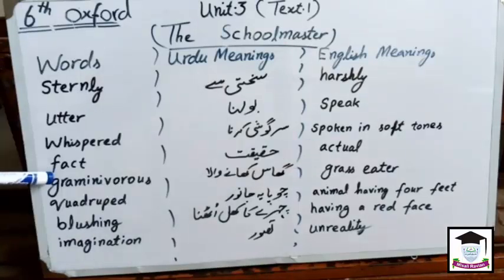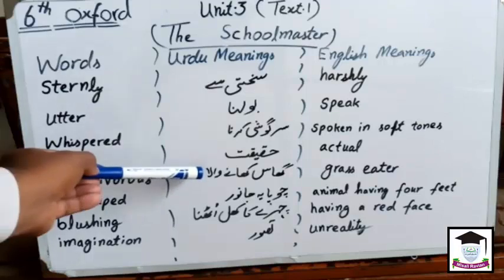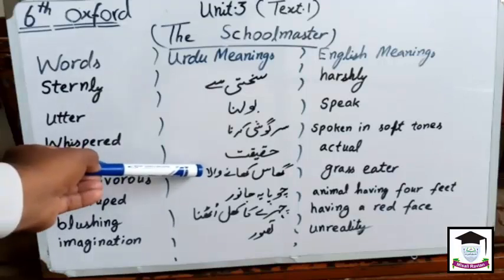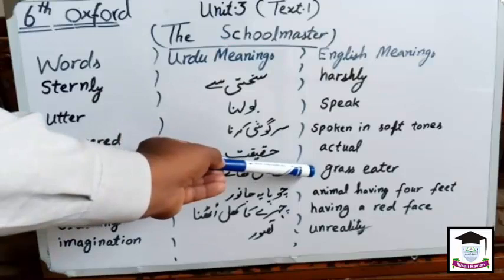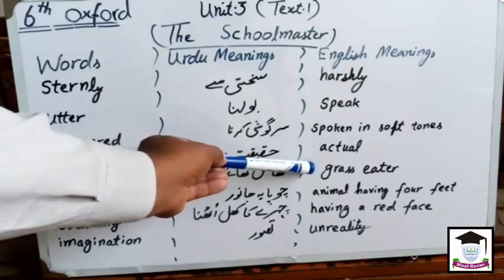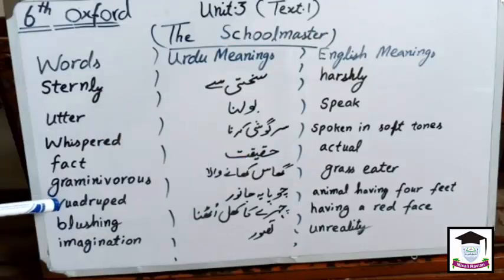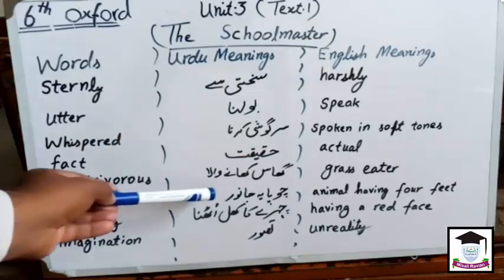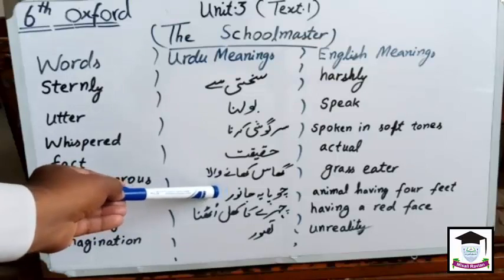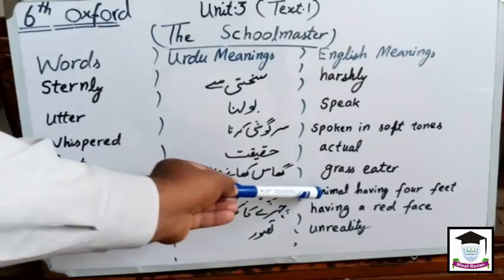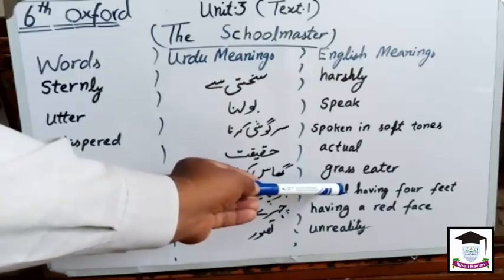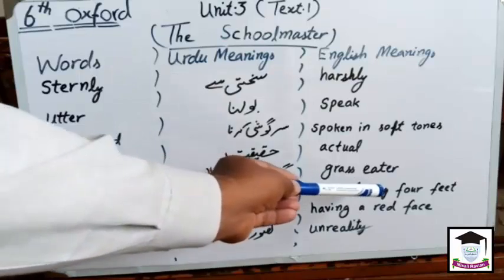Next word is gramnivores. Urdu meaning: dhas kaane waala. English meaning: grass eater. Next word is quadruped. Urdu meaning: chopaya janwar. English meaning: animal having four feet.